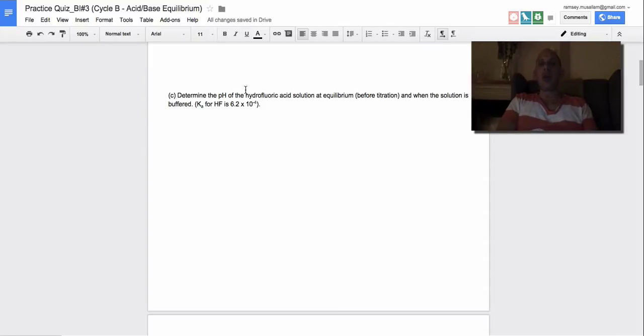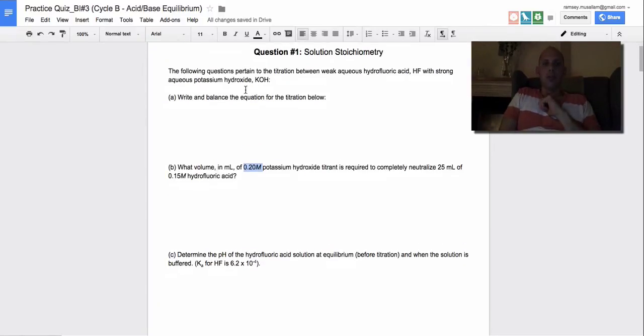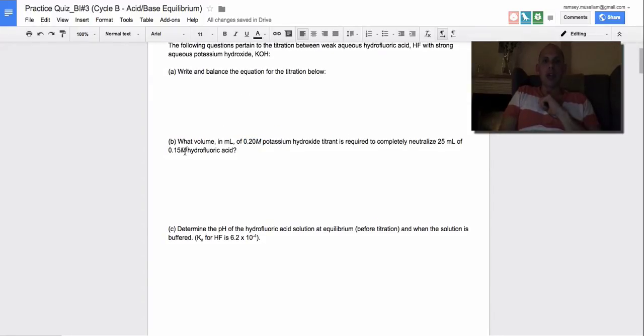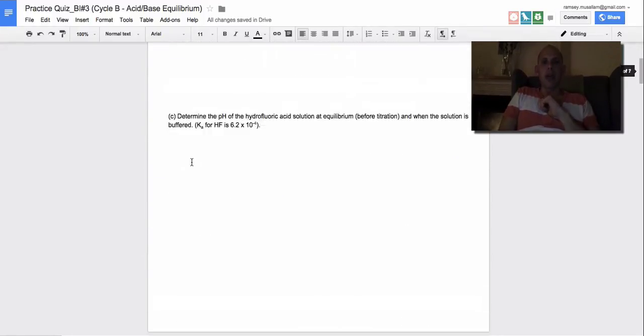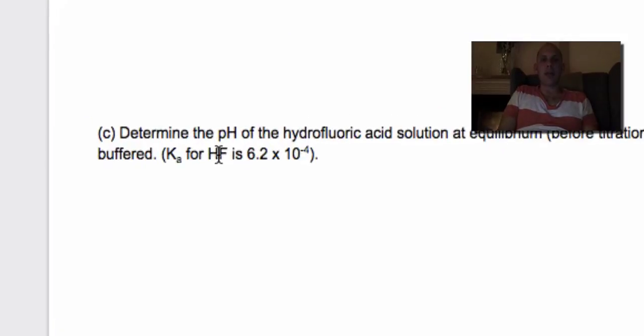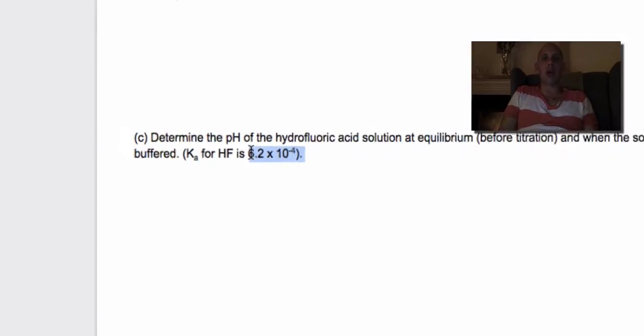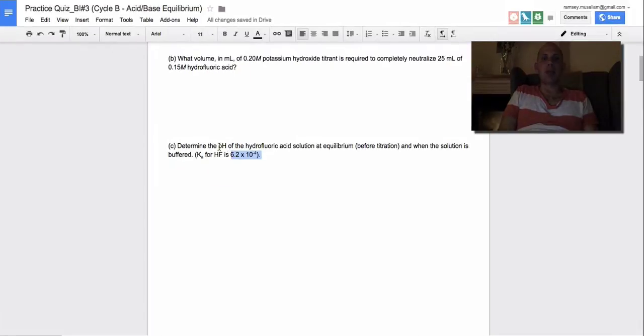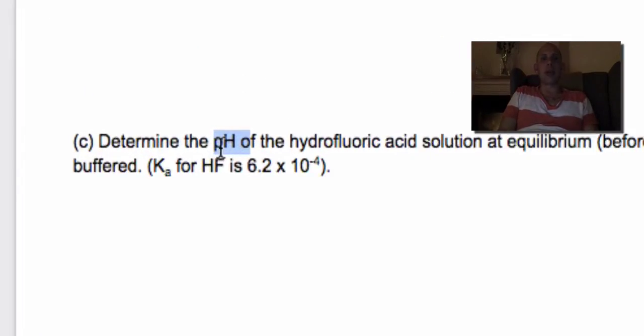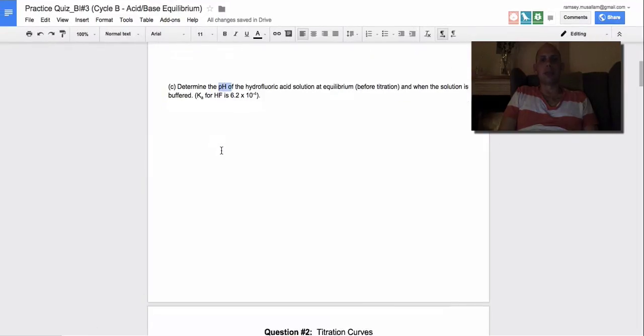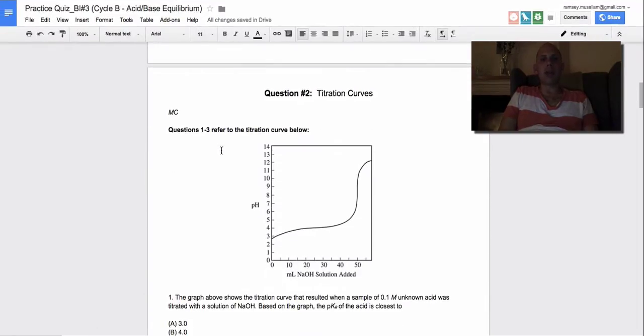Here they want the pH of hydrofluoric acid. You know that you're going to use the equation pH equals negative log of H plus, and in this case the H plus is the square root of Ka times the initial concentration of the acid. So here is the initial concentration of the acid, that's 0.5. You're going to multiply that by Ka, which is 6.24. You're going to take the square root of that - that's H plus - and then to get the pH you're simply going to take the negative log of that answer.